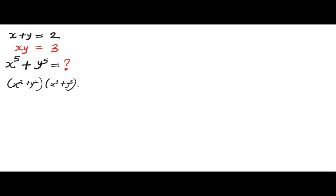So let's go ahead and multiply this out. In order to multiply two binomials, we take the first term and multiply the first term here, take the same first term to multiply the second term here, take the second term to multiply the first term, and take the second term to multiply the second term — we are just distributing. So x² × x³ = x⁵,